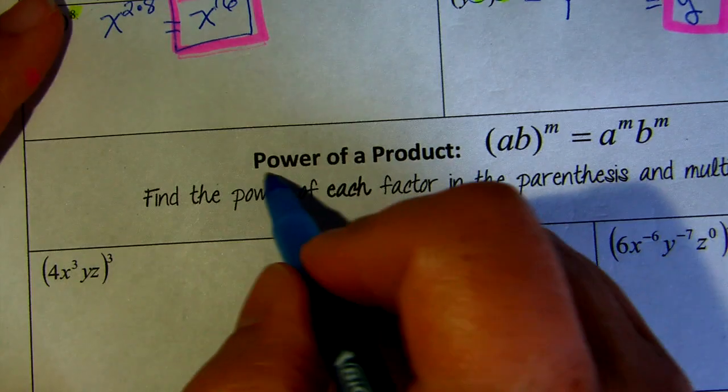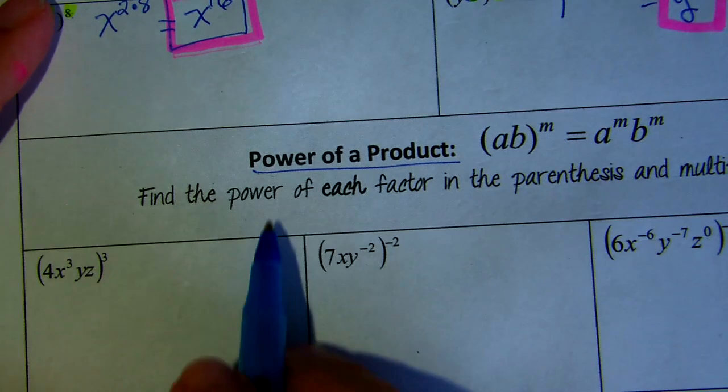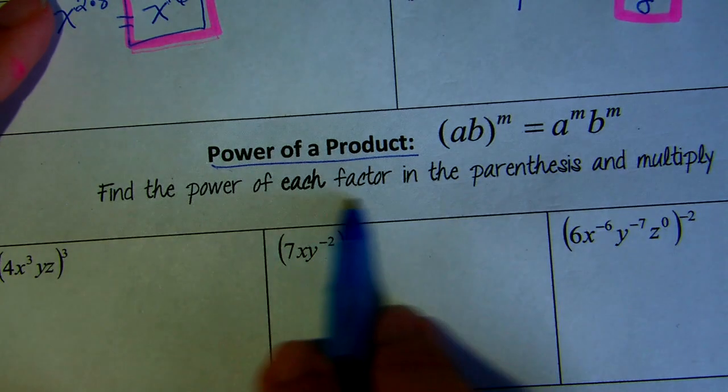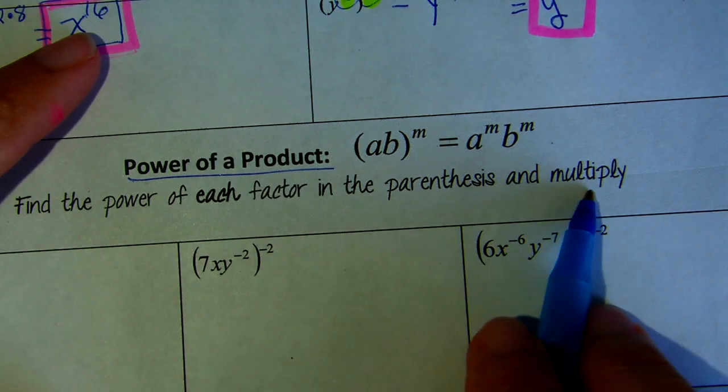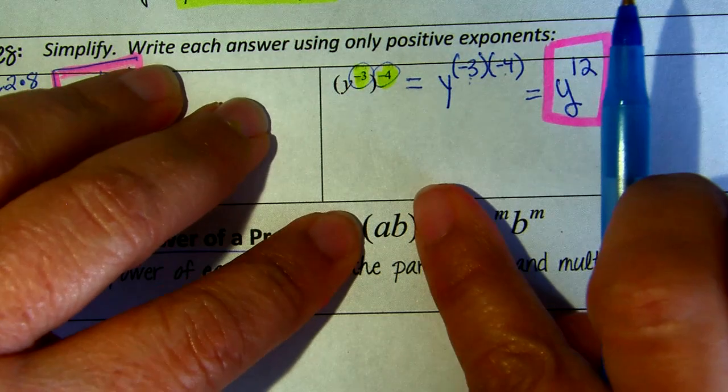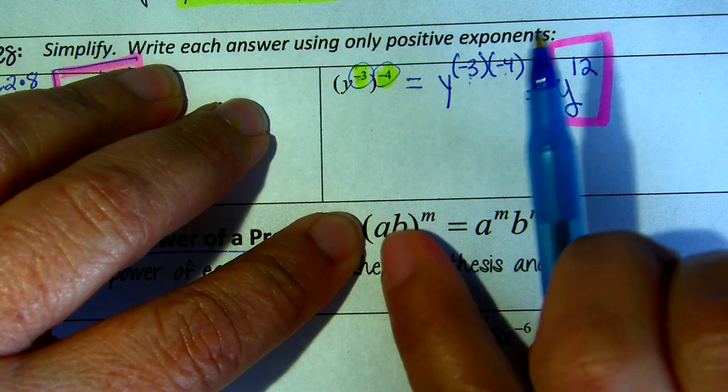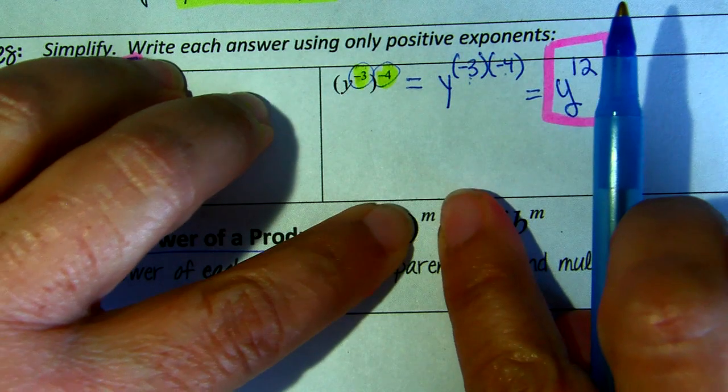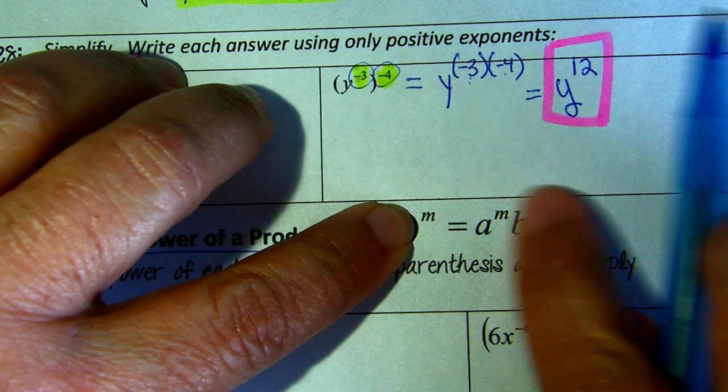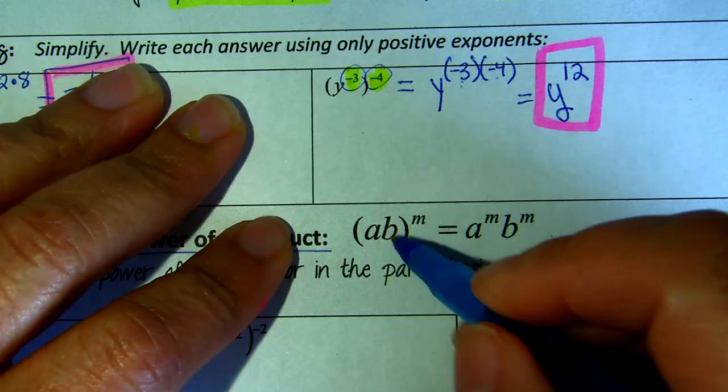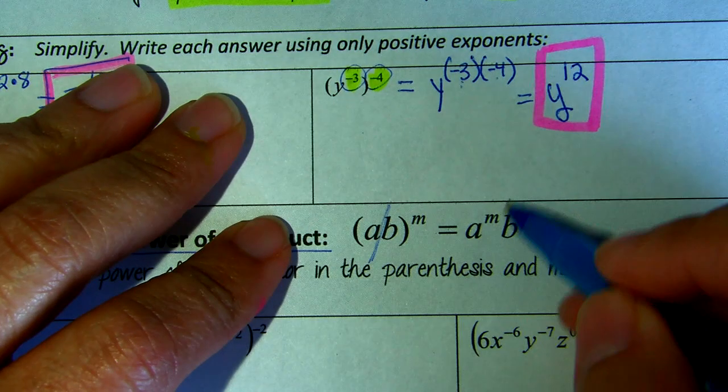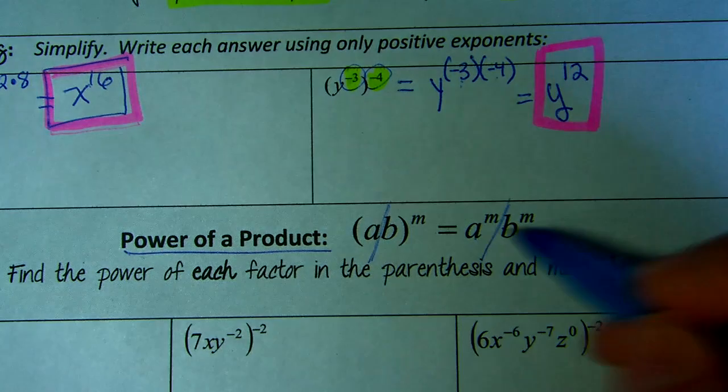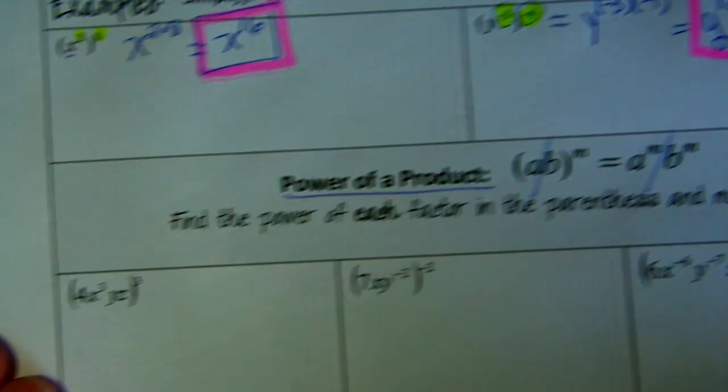Now, take a look at this. You have power of a product. Find the power of each factor in the parentheses and then multiply. So if you have two letters being multiplied inside, raised to a power of M is the same as separating this. You split them and each one of them is elevated to the power of M or whatever power you have.